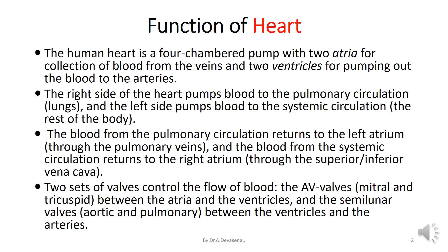Two sets of valves control the flow of blood. They are AV valves — atrioventricular valves — i.e., mitral and tricuspid valve. These valves are located between the atria and the ventricles. And the semilunar valves, i.e., aortic and pulmonary valve, are located between the ventricles and the arteries.